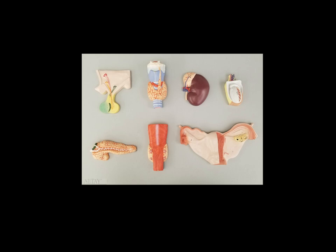Here is our second endocrine model. It really is showing us all of the same structures, but let's go ahead and look to see what everything is. Here in the top left, this is the pituitary and hypothalamus. We can see the hypothalamus and we can actually see the supraoptic nucleus and the paraventricular nucleus that extend through the infundibulum down into the posterior pituitary gland. And then we can see these other neurons that only extend down into the infundibulum and stop, not reaching the anterior pituitary gland.